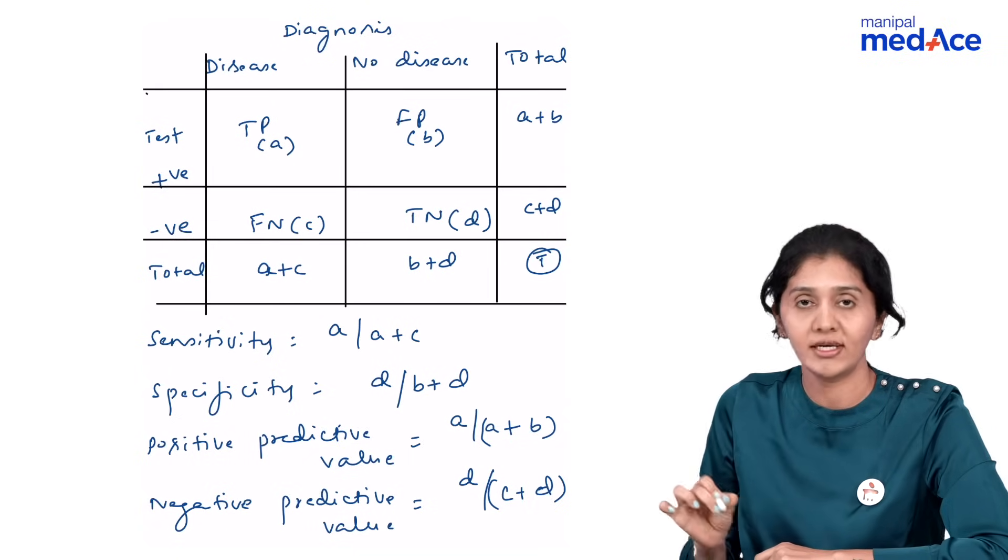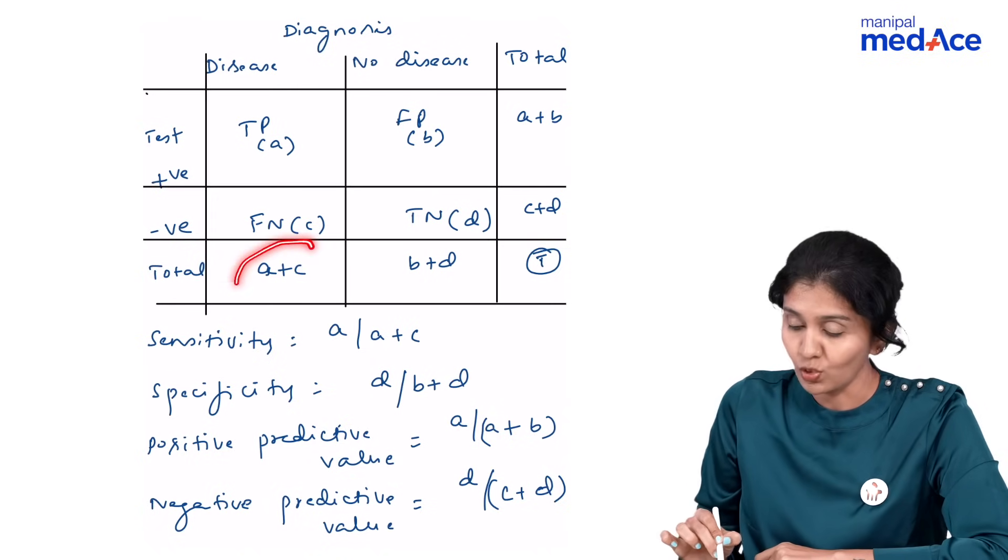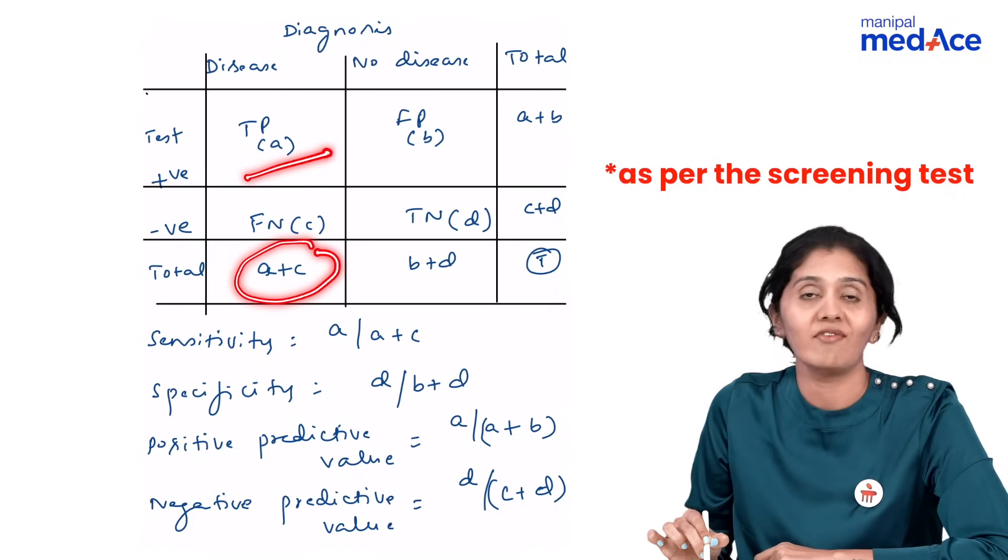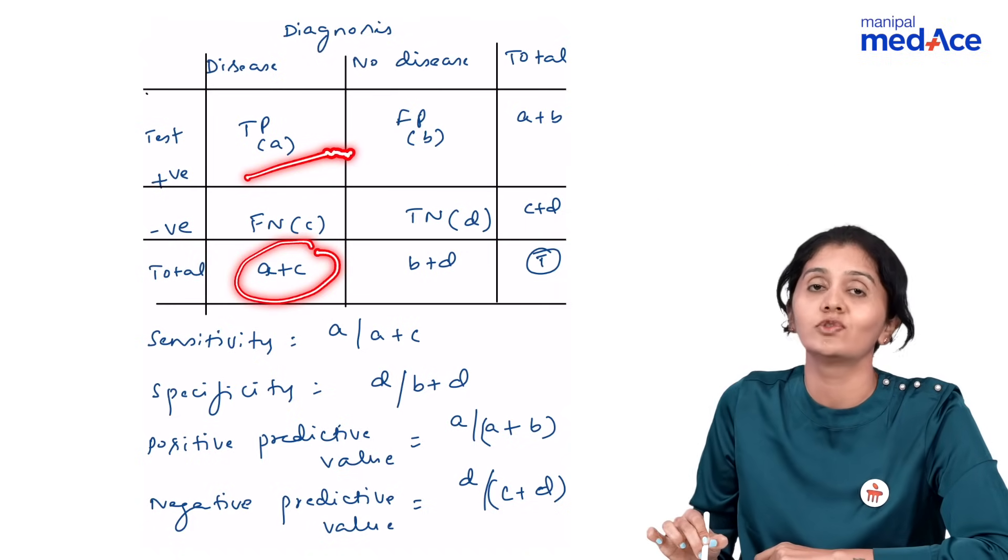With this background, let us understand the formulas. Sensitivity is A divided by A plus C. That is out of the total diseased, how many have the disease? It tells us about the ability of the test to detect all those individuals who have the disease.